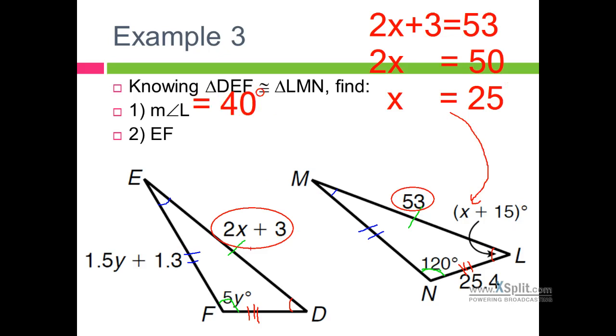We can also do the same thing for Y. I want to find side EF. I'm going to switch over maybe to pink. I have a 1.5Y plus 1.3. But its corresponding congruent side, we don't have any information. There's nothing I can solve there. It has a Y in it. I see that there's a Y over here. A 5Y that corresponds to the 120. 5Y equals 120.